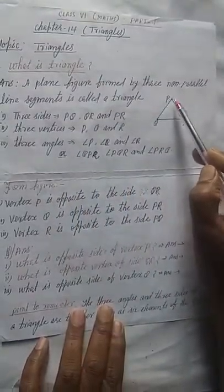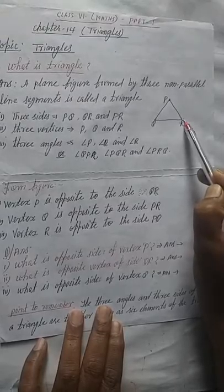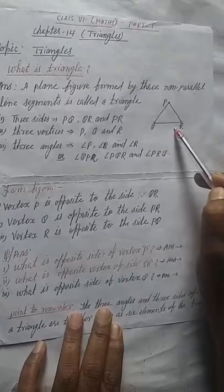Three vertices. Okay. Vertex P, vertex Q, and vertex R. Three angles: angle P, angle Q, and angle R.